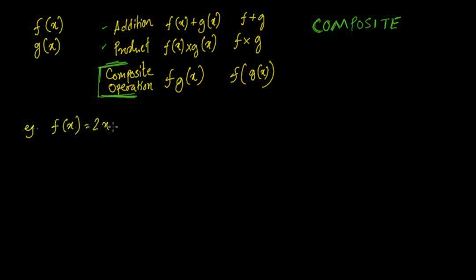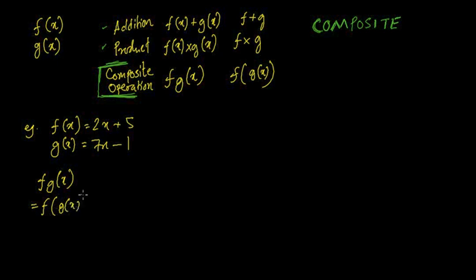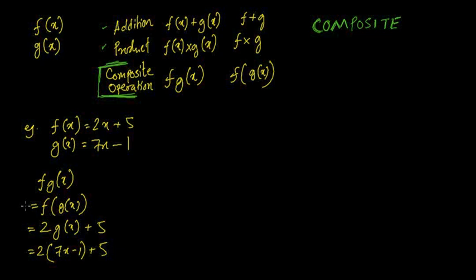Let's do an example. f(x) = 2x + 5 and g(x) = 7x − 1. For f(g(x)), put g(x) inside f(x): f(g(x)) = 2(g(x)) + 5 = 2(7x − 1) + 5 = 14x − 2 + 5 = 14x + 3.